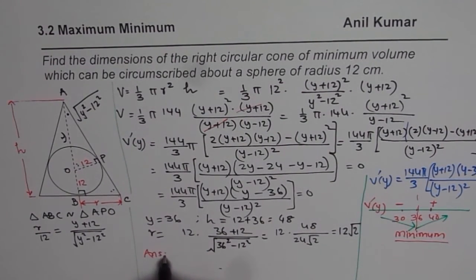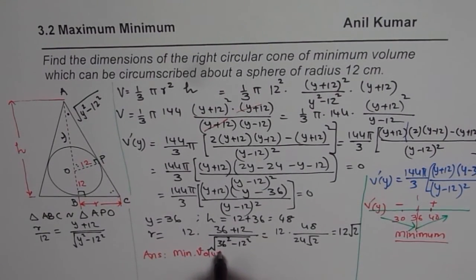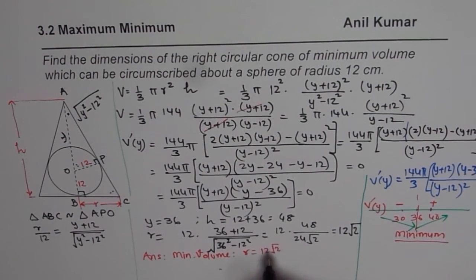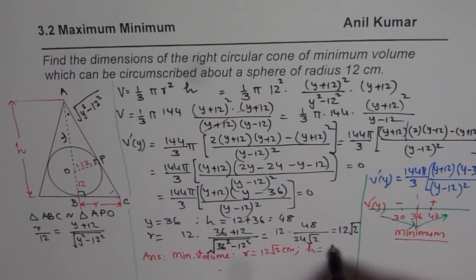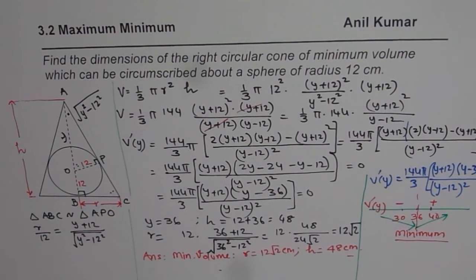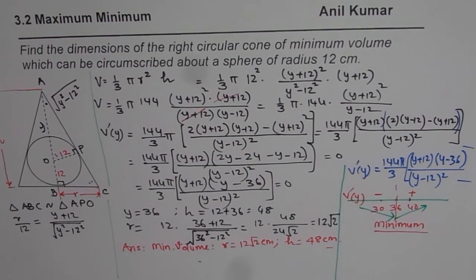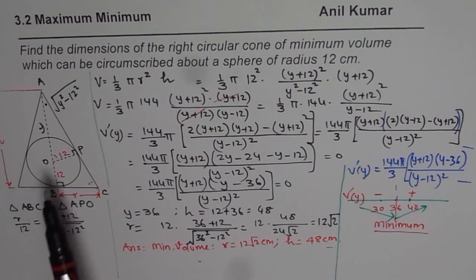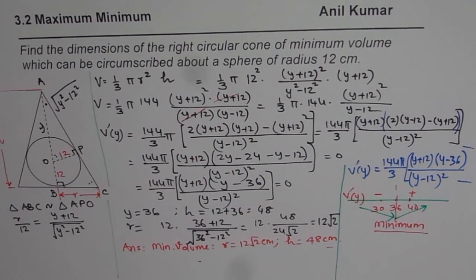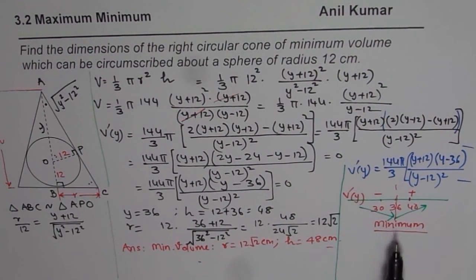The answer for the minimum volume cone circumscribed about a sphere of radius 12 cm is: r equals 12 root 2 centimeters and height equals 48 centimeters. The key steps were using similar triangles to relate r and height, deriving the volume formula, finding the critical point by setting the derivative to zero, and confirming it is a minimum. I hope that helps — I'm Anil Kumar, subscribe to my videos and all the best.